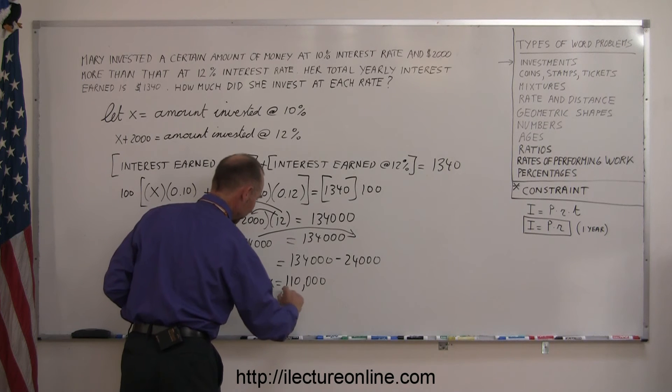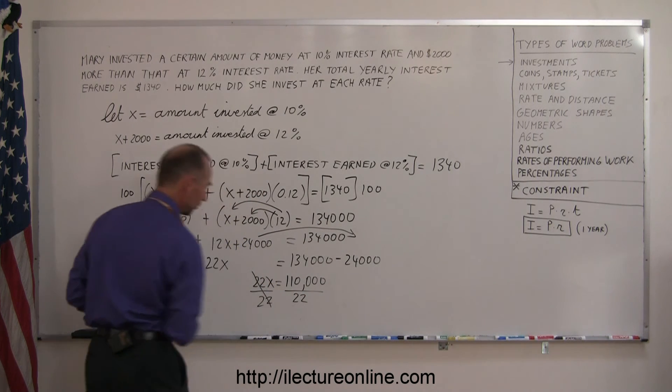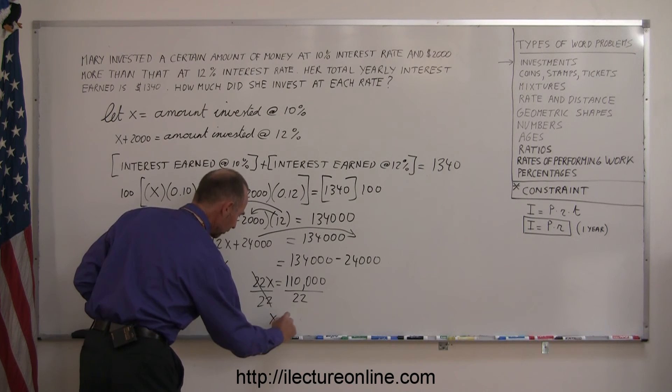Finally, I divide both sides of the equation by 22. That cancels out, so I end up with x equals... what's 110,000 divided by 22?